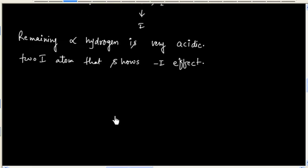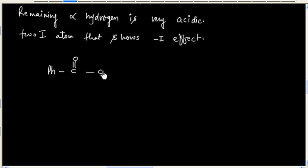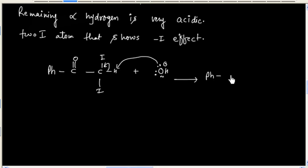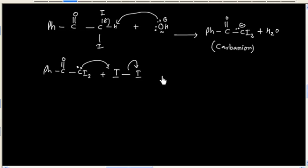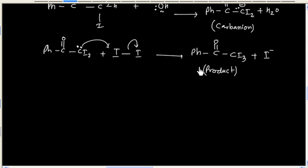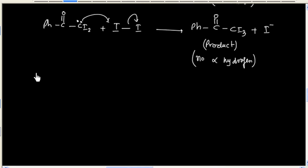In the next step, we will again have an acid-base reaction. OH- will abstract a proton, acting as a base, and we will have this carbanion formed. This carbanion will again act as a nucleophile and it will react with iodine. This is the product, and it does not have any alpha-hydrogen — there is no alpha-hydrogen remaining, so the acid-base reaction is over.